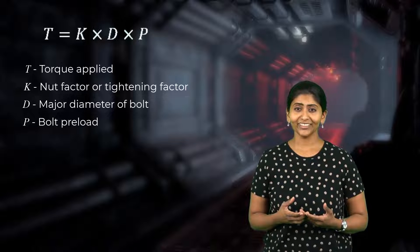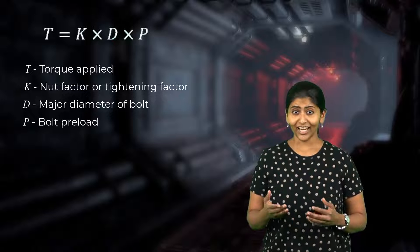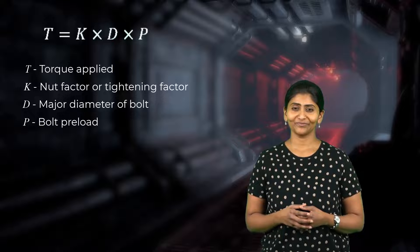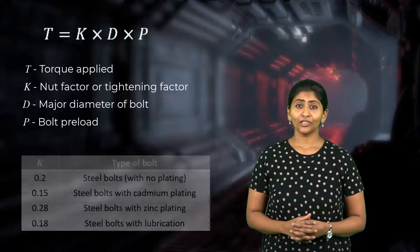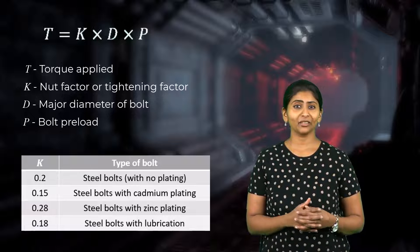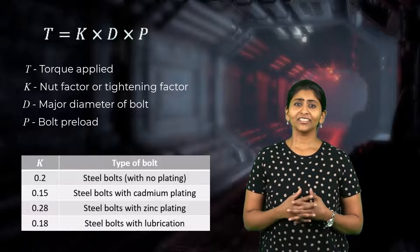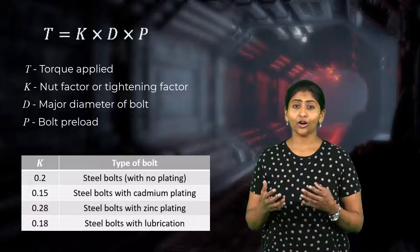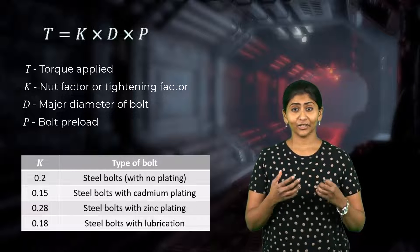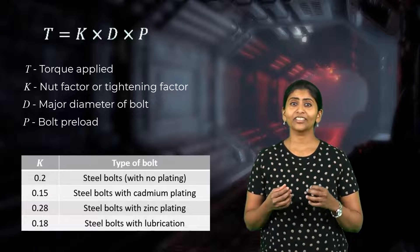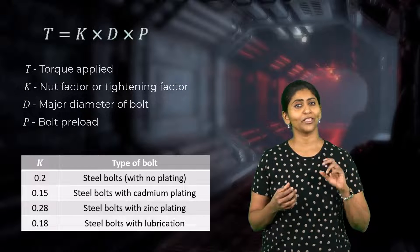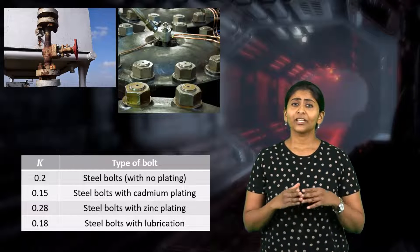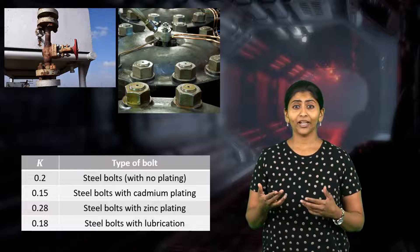The nut factor K, also known as the tightening factor, depends on the friction between the nut and bolt threads and the materials used for the nut and bolt. Representative values for a few cases are shown in the table. Reducing the friction between the bolt and nut threads by using external lubricants or cadmium plating reduces the nut factor, and hence less torque is required to achieve a certain bolt preload. That is why tightening or loosening rusted bolts requires much more torque compared to new bolts.